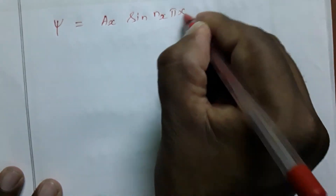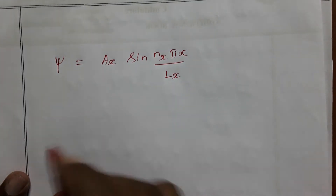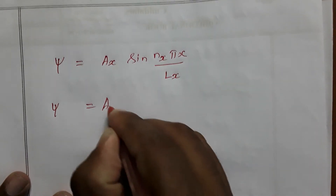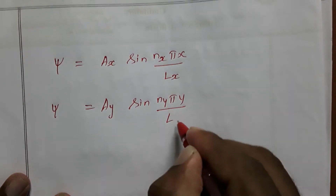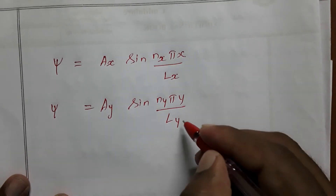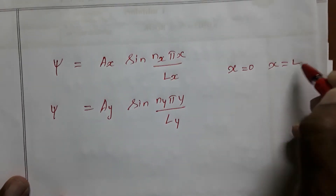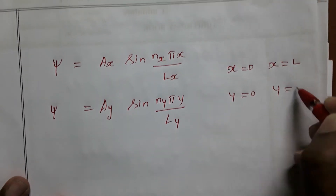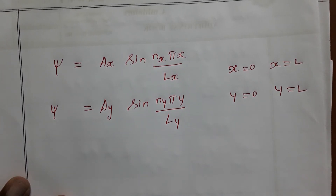The wave function in the x-direction is X(x) = Aₓ sin(nₓπx/lₓ), and in the y-direction Y(y) = A_y sin(n_yπy/l_y). The boundary conditions are: x = 0, x = lₓ, y = 0, and y = l_y. Applying these boundary conditions to the wave functions gives us the allowed solutions.